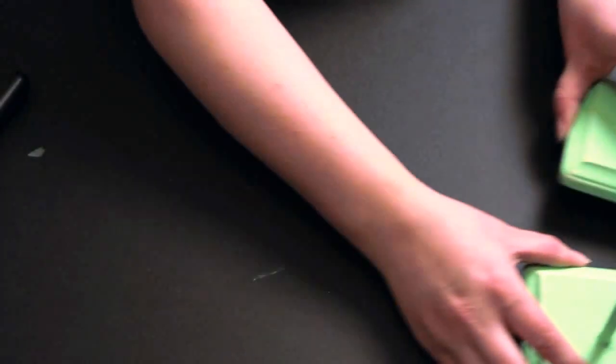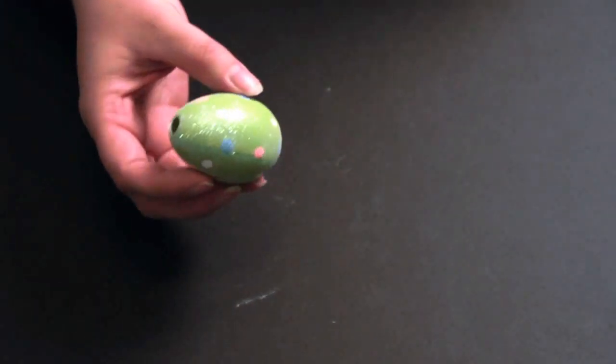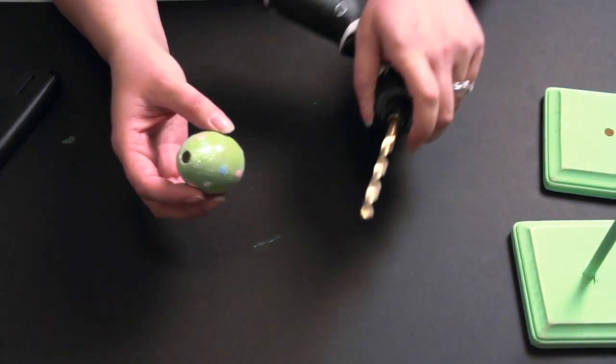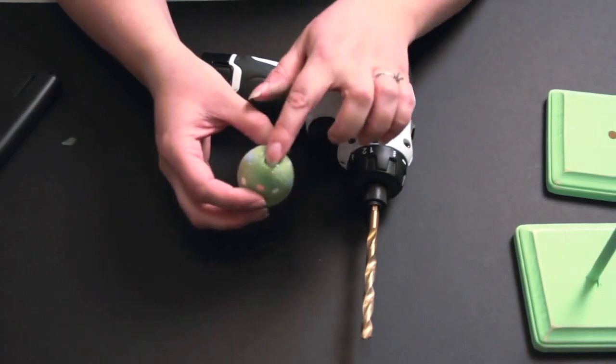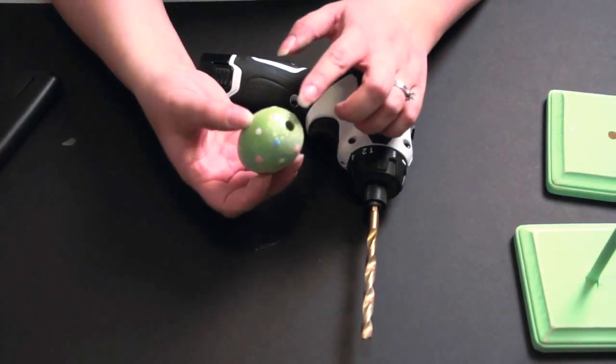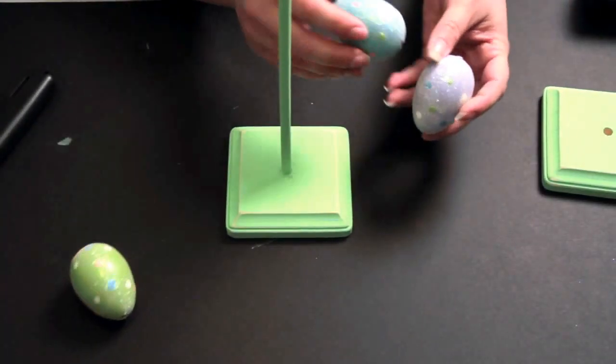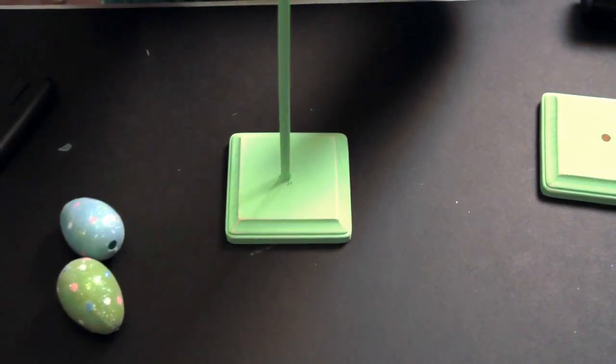Once your edges are sanded and your wood is painted, then we are able to add the eggs to the dowel. I've already drilled holes in mine, but all you're going to do is take your 5 sixteenths drill bit that I used to drill the holes in the wood, and you're going to drill a hole on the top and you're going to drill a hole on the bottom. Once the holes are all drilled, then you can add them to your dowel just by sliding them on.